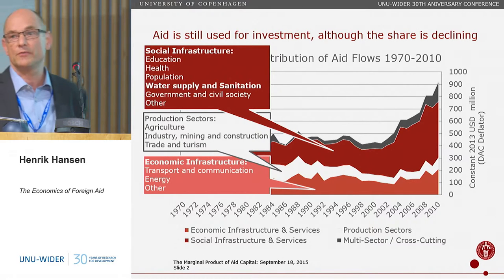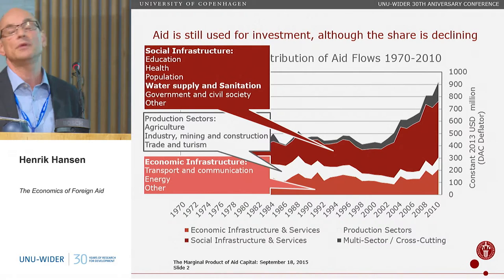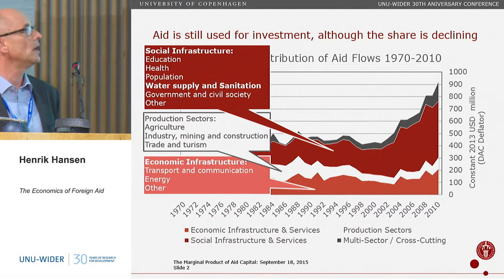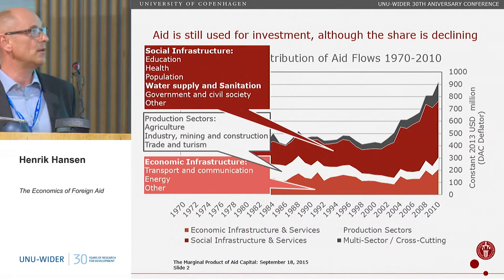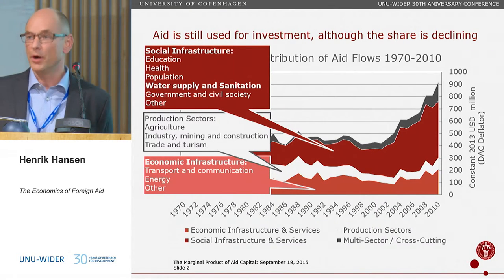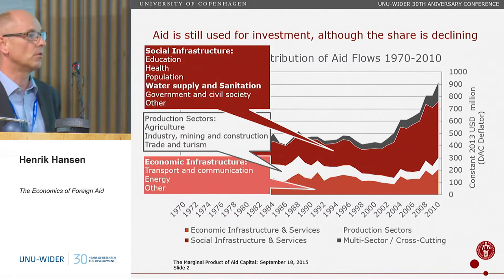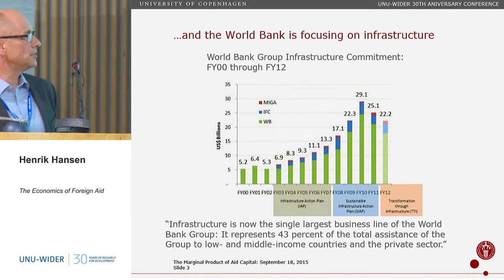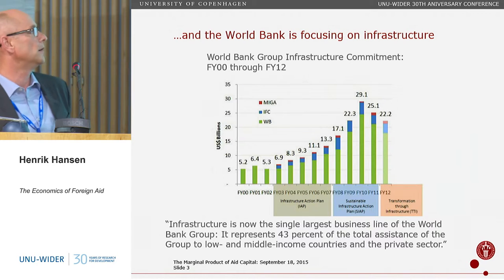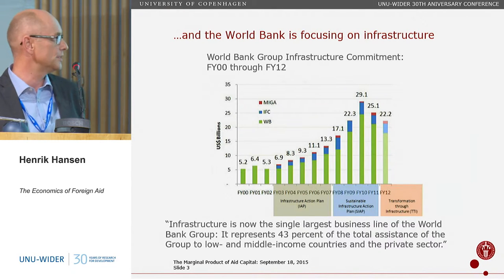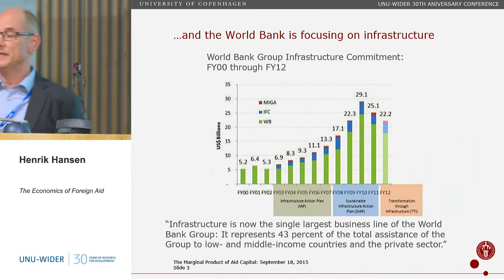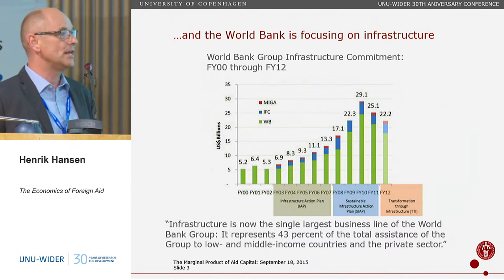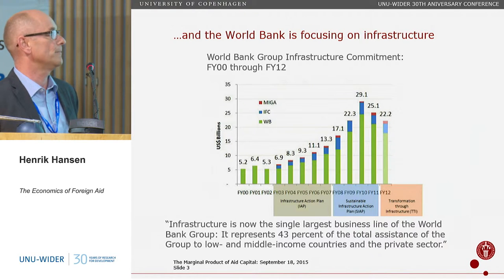We also have social infrastructure, where we see the largest increase, including water supply and sanitation. On top, not shown here, are multi-sectoral allocations and budget support. What this shows is that we actually spent a substantial amount on capital investment in infrastructure. The World Bank has also shifted — infrastructure is now its single largest business line, representing 43 percent of total assistance to low and middle income countries. Capital and infrastructure are firmly on the aid agenda.